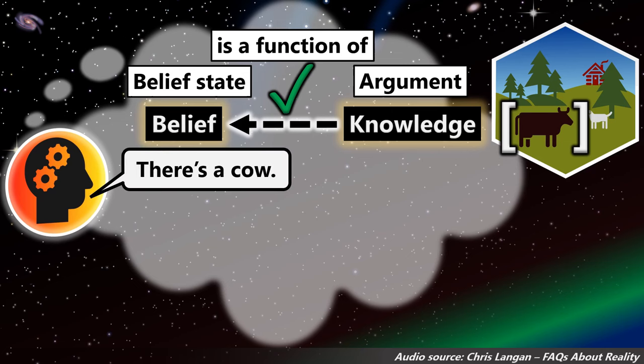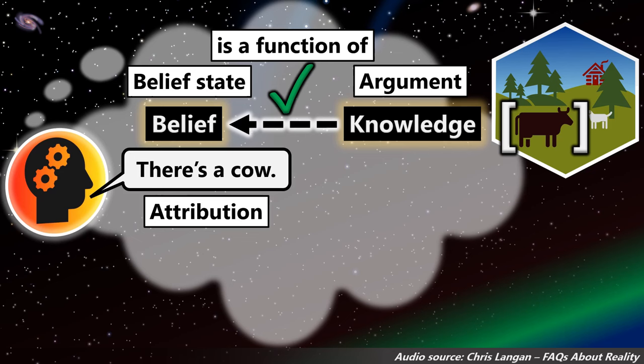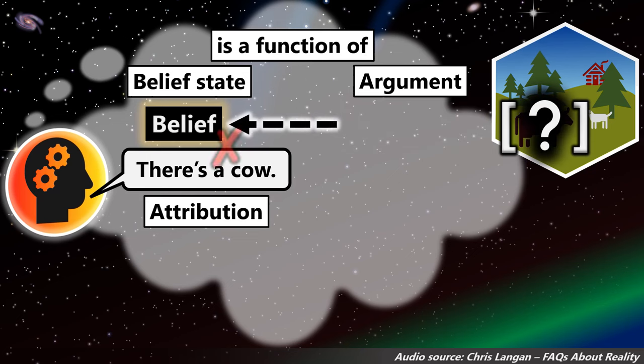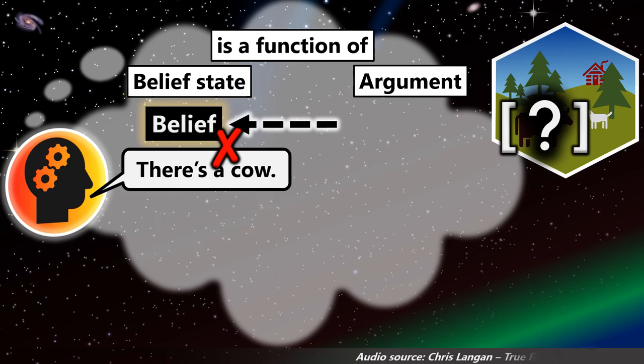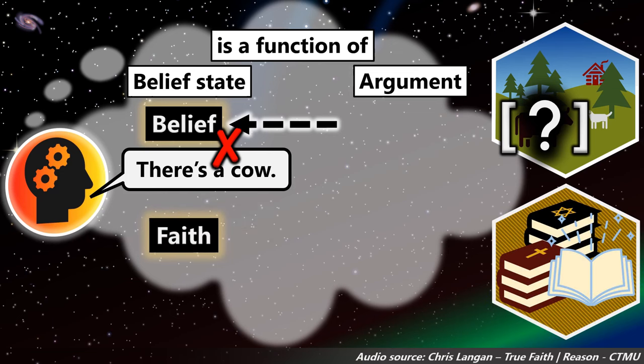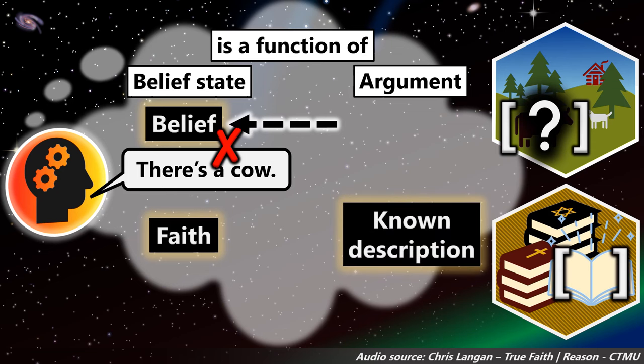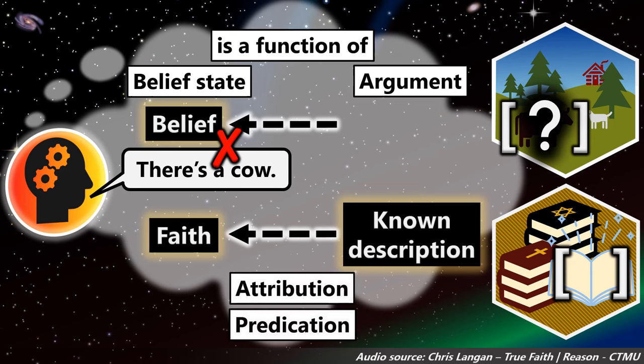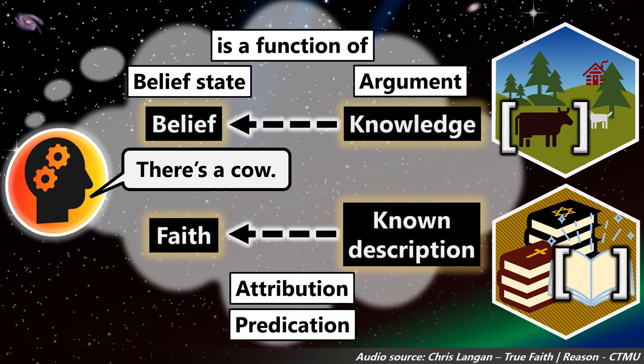By the same token, the attribution of existence requires knowledge of that which exists. And knowledge of something implies that it does, in fact, exist. We can't say that we know something if it doesn't exist, because there's nothing to know. How can you invest faith in something that you don't know what it is? You need at least an elementary description of it before you can attribute faith to it, before you can invest belief in it.